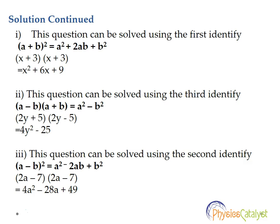Part 1. Here the question is (x + 3)(x + 3), which equals (x + 3)². From the first identity, (a + b)² = a² + 2ab + b², so the solution would be x² + 6x + 9.